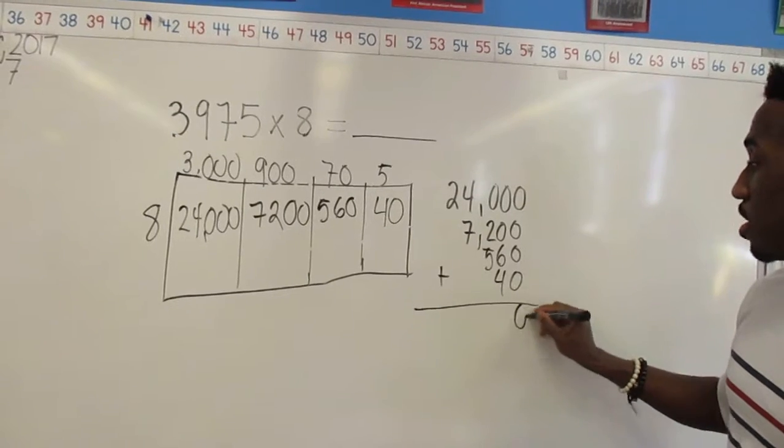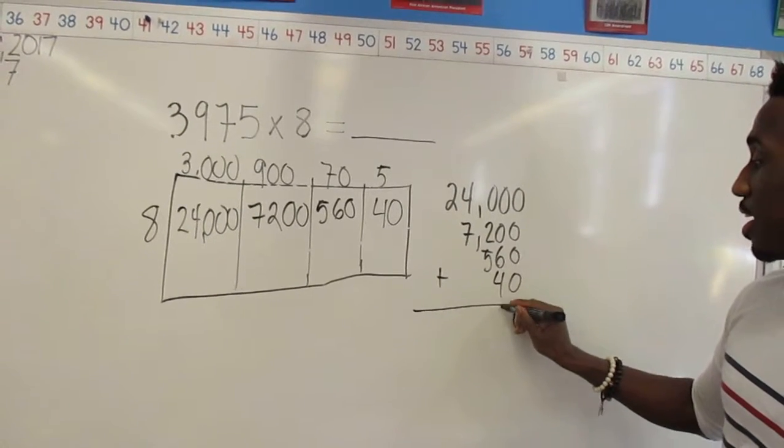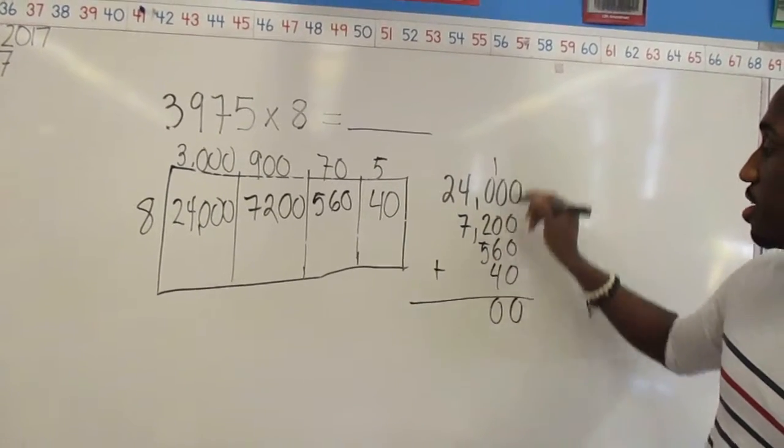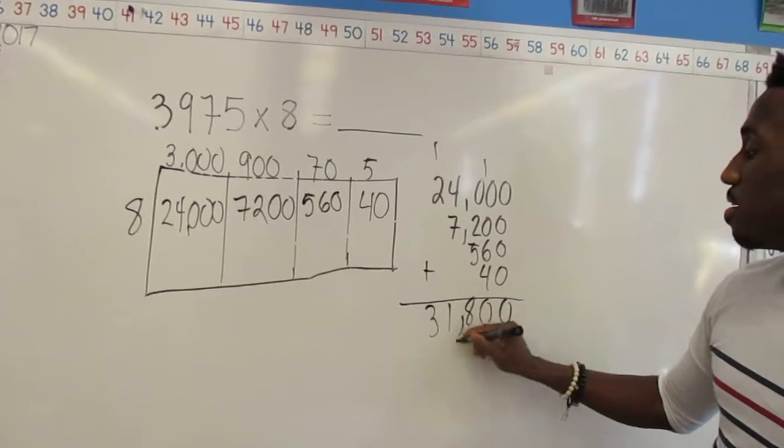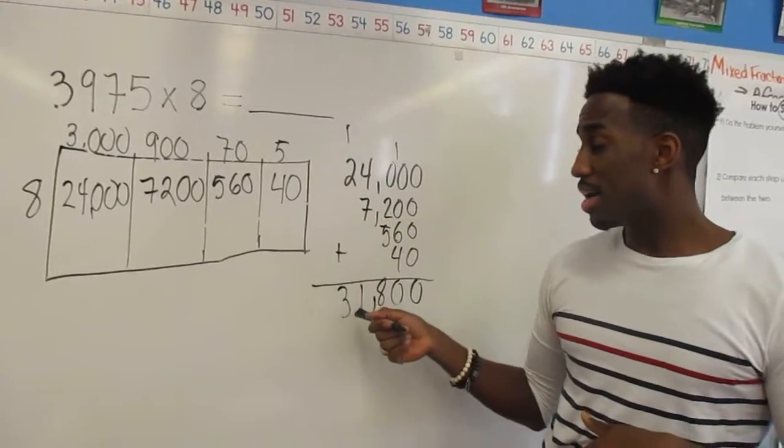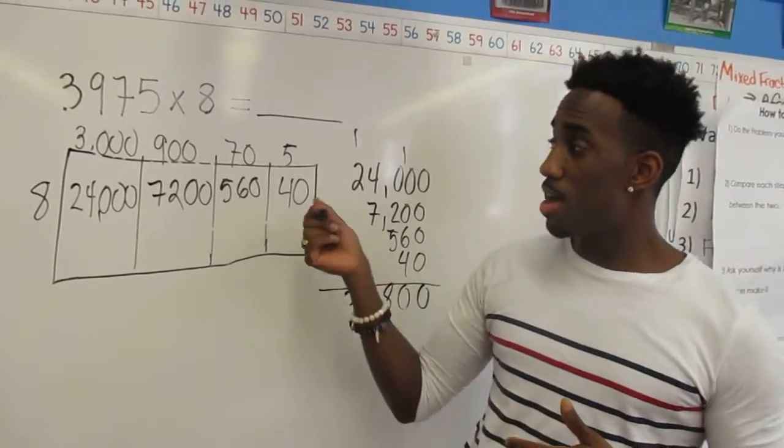Now I'm going to add up my numbers based on place value: 6 and 4 is 10, 100, 5, 6, 7, 800, 11, 31,000. And there I got my answer of 31,800 using the area model for multiplication.